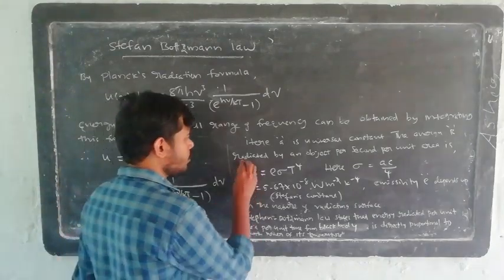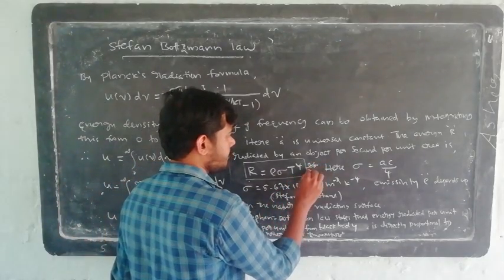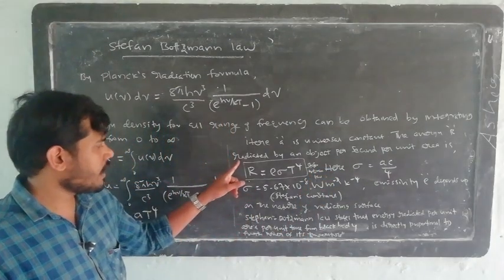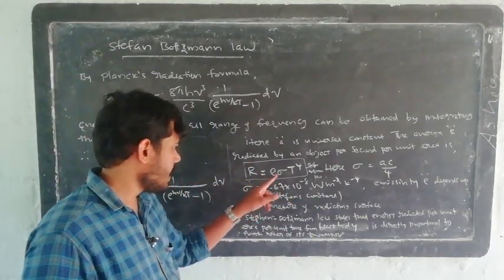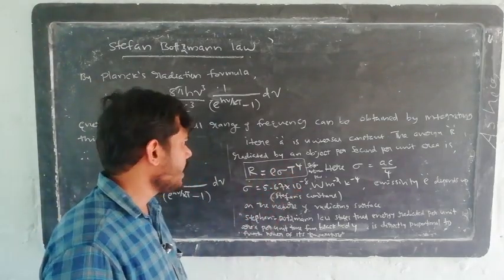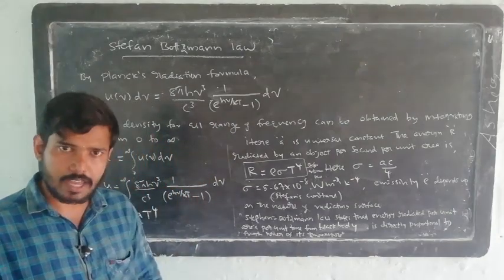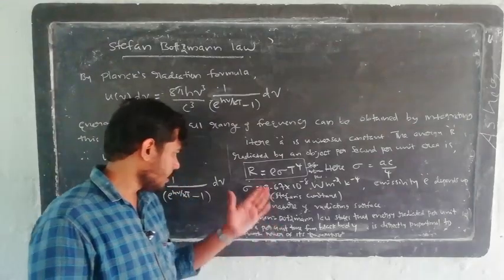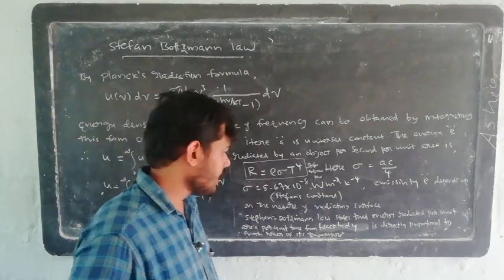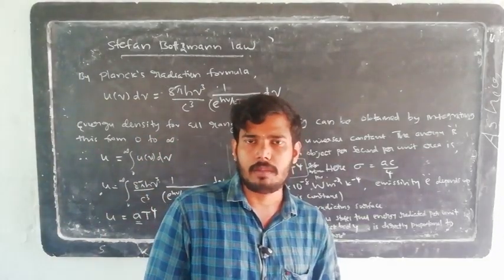R = e·σ·T⁴ is the Stefan-Boltzmann law. It states that energy radiated by an object per second per unit area is directly proportional to the fourth power of temperature: R ∝ T⁴. The Stefan-Boltzmann law states that energy radiated per unit area per unit time from a black body is directly proportional to the fourth power of its temperature. Thank you.